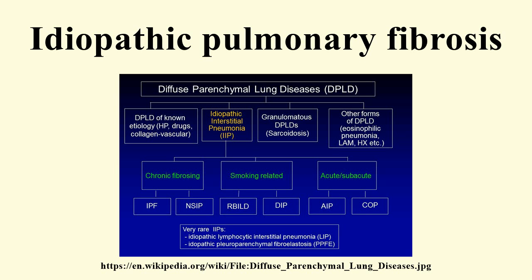IPF is believed to be the result of an aberrant wound healing process involving abnormal and excessive deposition of collagen in the pulmonary interstitium with minimal associated inflammation. It is hypothesized that the initial or repetitive injury in IPF occurs to the lung cells called alveolar epithelial cells, which line the majority of the alveolar surface. When type 1 AECs are damaged or lost, type 2 AECs undergo proliferation to cover the exposed basement membranes. Under pathologic conditions and in the presence of transforming growth factor beta, fibroblasts accumulate in these areas of damage and differentiate into myofibroblasts that secrete collagen and other proteins.